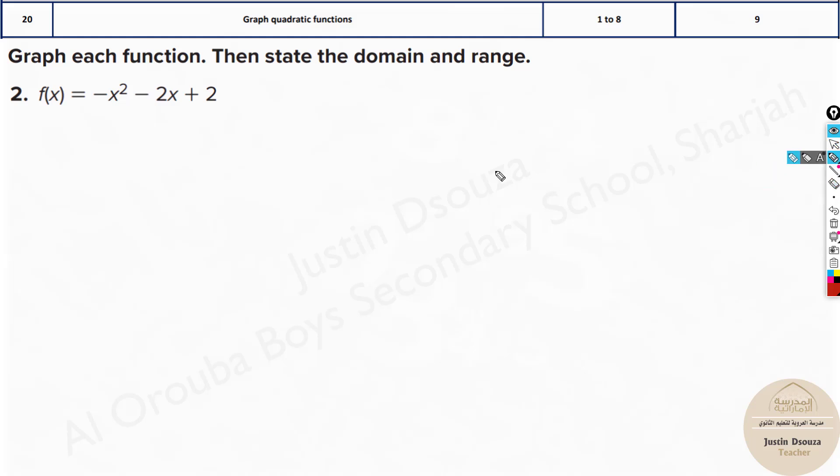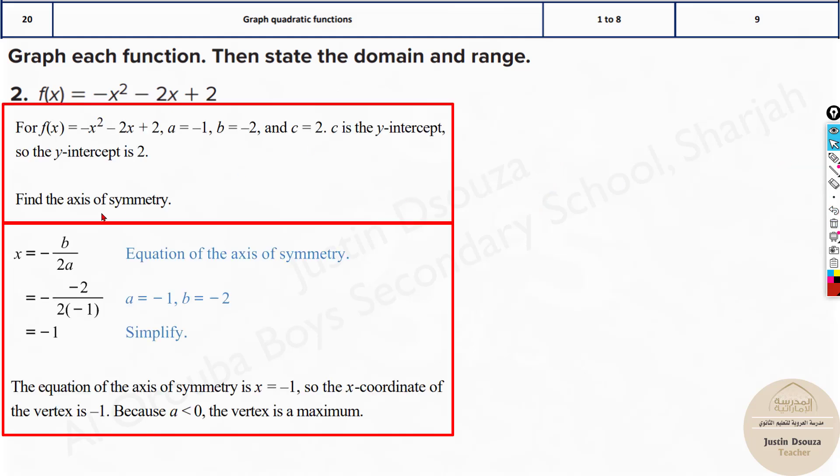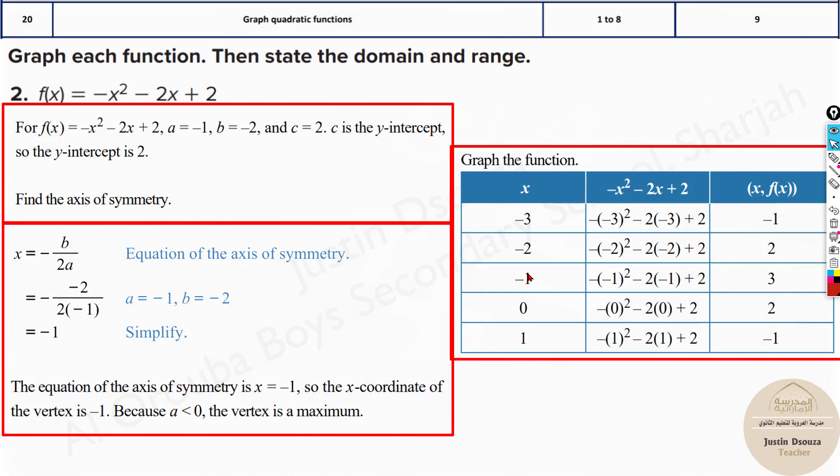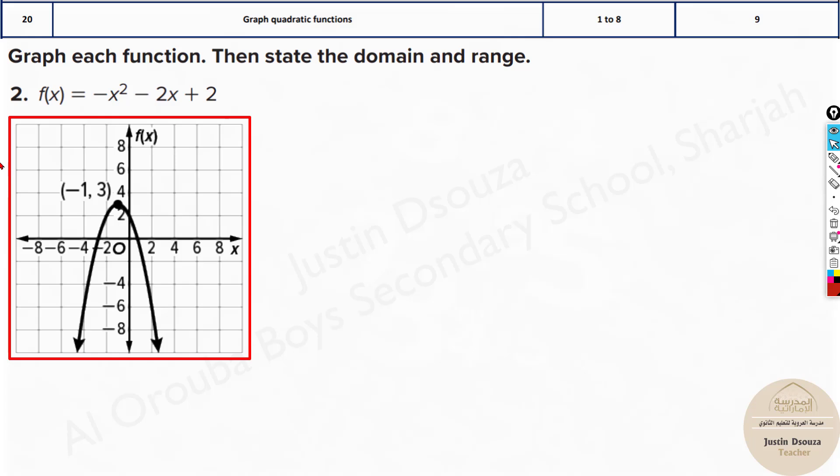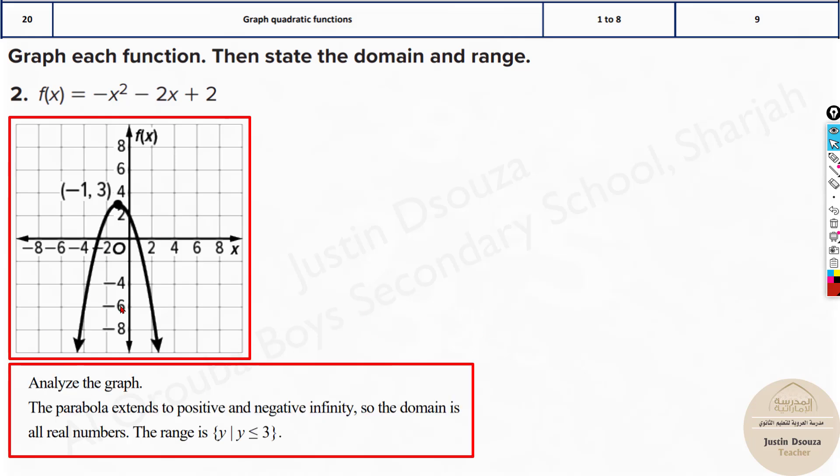And now these are all the same problems. Just one important thing to know is, whenever you have the leading coefficient positive, positive. Now, if it's positive 2 or anything, it'll always open upwards. Whereas if it's minus, it'll go downwards. When you do the table, you'll get the points. And then accordingly, if you join them, you'll get the graph downwards. So here, the first step, defining the axis of symmetry of the vertex, and then using that point, two less points and two more points, and then easily graphing it up. And that's the answer.